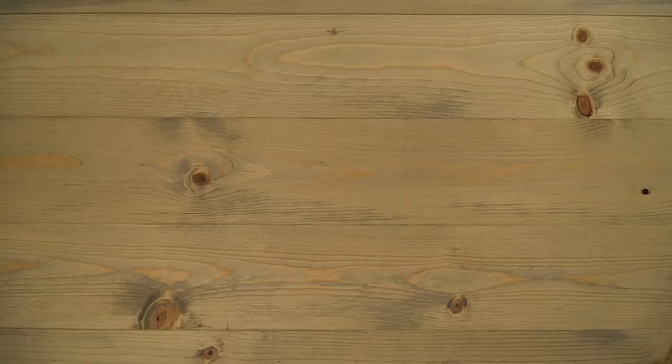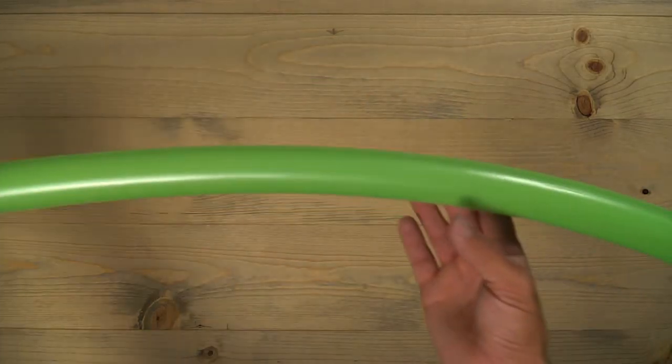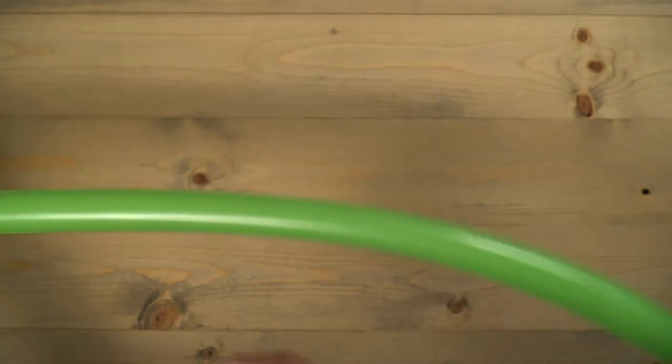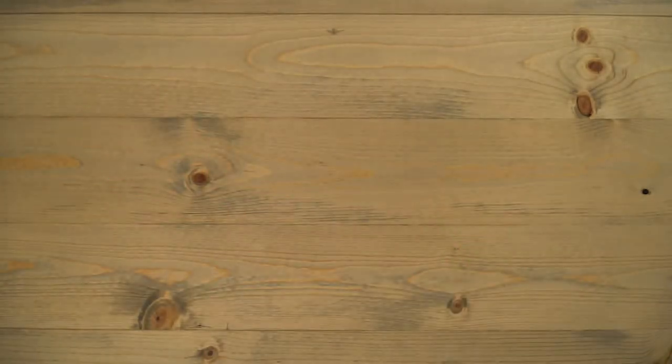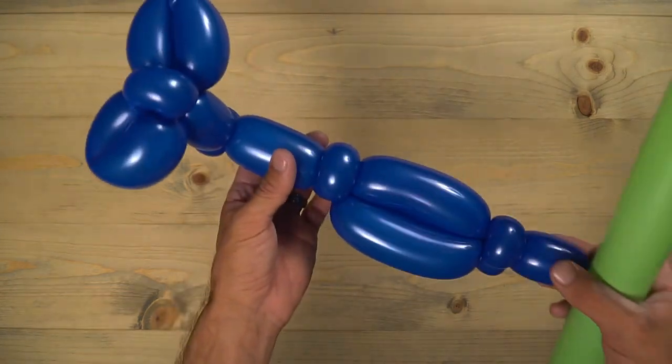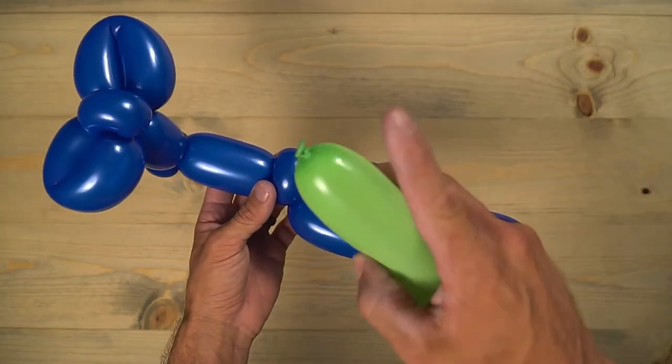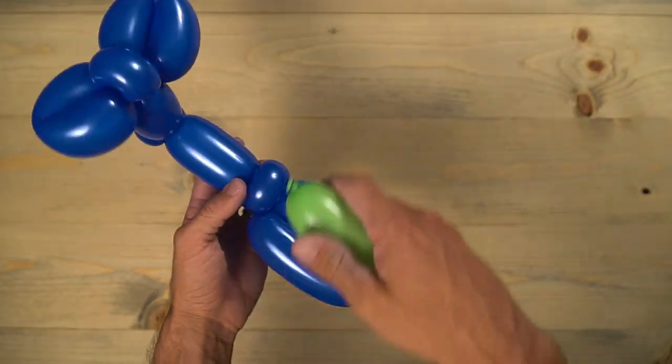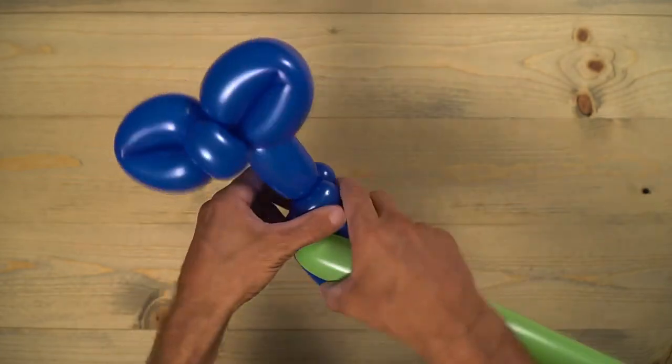Now we just need that last balloon. In this case, I'm using the lime green. Leave a little bit extra there at the end. This is going to be for the wings. So we're going to use that nozzle there and put it right there between those pinch twists.